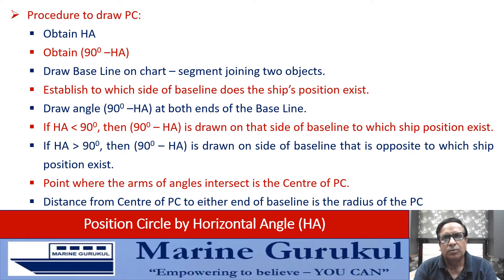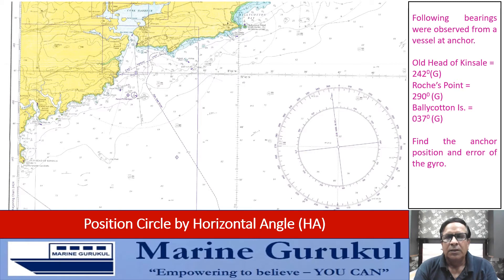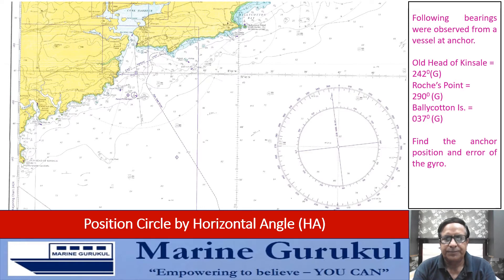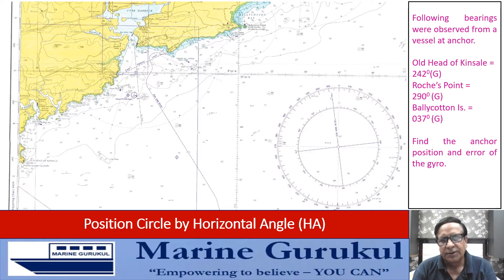We shall see how to implement this procedure through a simple example. Following bearings were observed from a vessel at anchor: Old Head of Kinsale 242° gyro, Roches Point 290° gyro, Bellycotton Island 037° gyro. Find the anchor position and the error of the gyro. Since gyro error is not given, we cannot use cross bearings, so we deploy the process of position circle by horizontal angles.